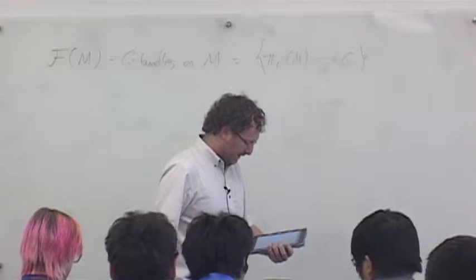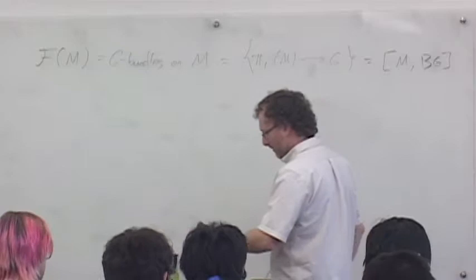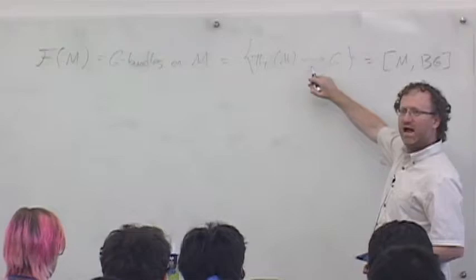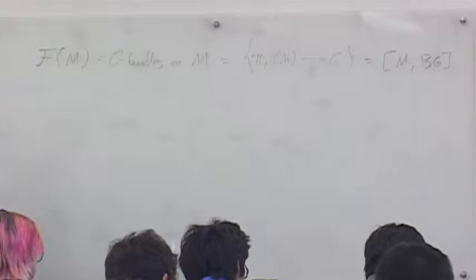Or you can think about these as maps from M to the classifying space of G-bundles — lots of ways to think about G-bundles. I'm going to think of this as an orbifold, as a stack, so I'm not looking at these up to equivalence — I'm remembering the equivalences, remembering these guys have automorphisms.